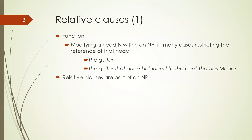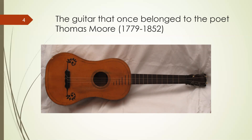The relative clause 'that once belonged to the poet Thomas Moore' is part of the noun phrase headed by 'the guitar.' In English, relative clauses go after the head noun but are part of the noun phrase. This is a photograph of that guitar. Thomas Moore lived from 1779 to 1852, and he was, among others, a close personal friend of the famous poets Lord Byron, Percy Shelley, and John Keats. He was actually Byron's executor.